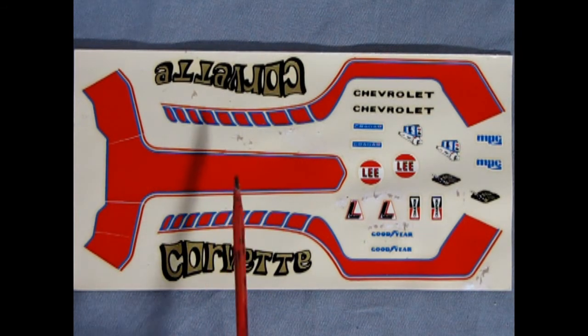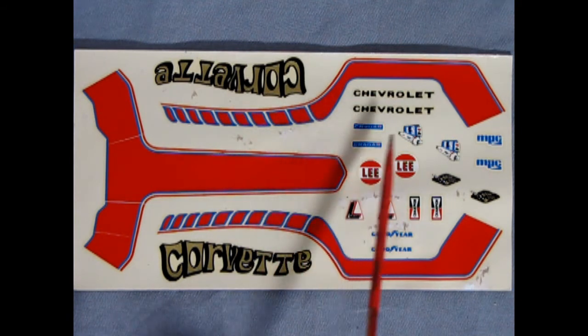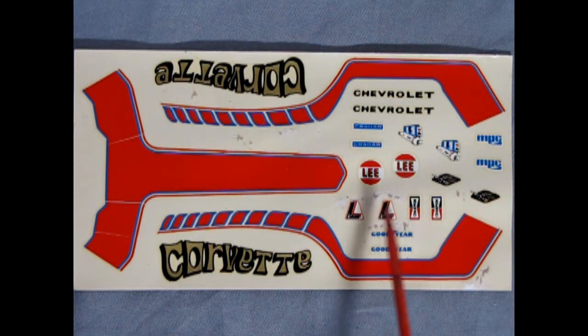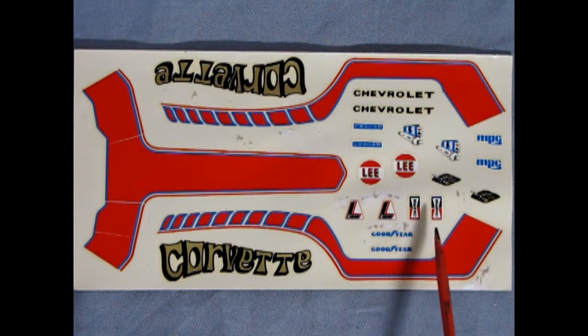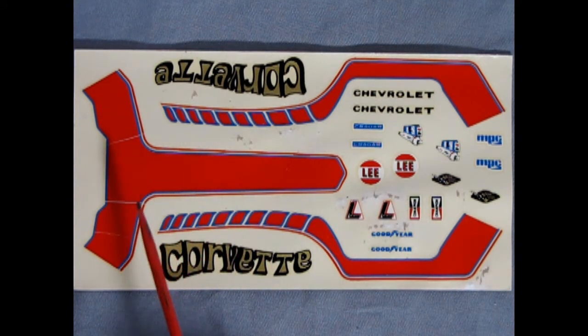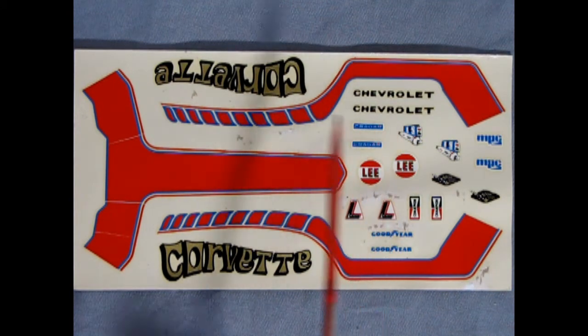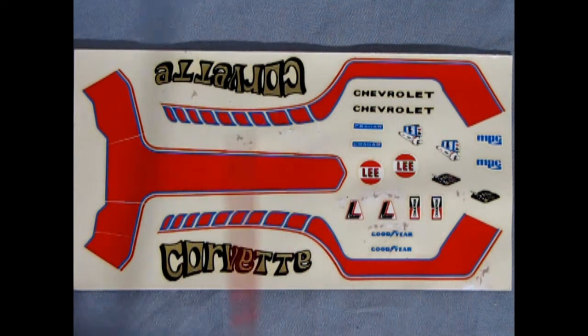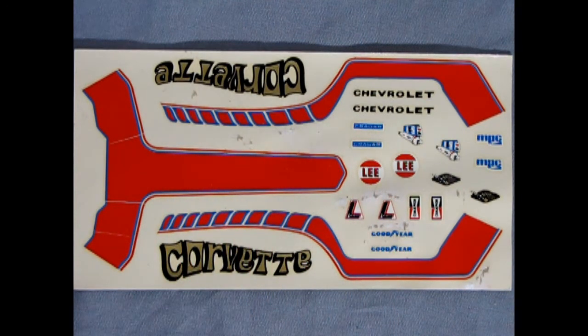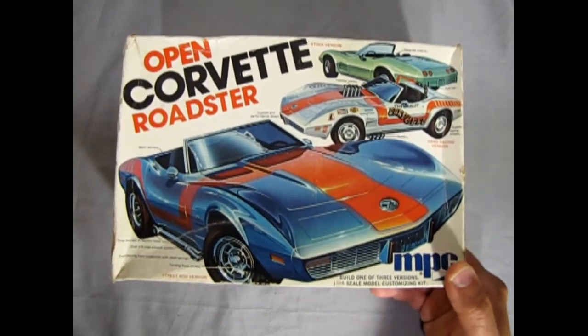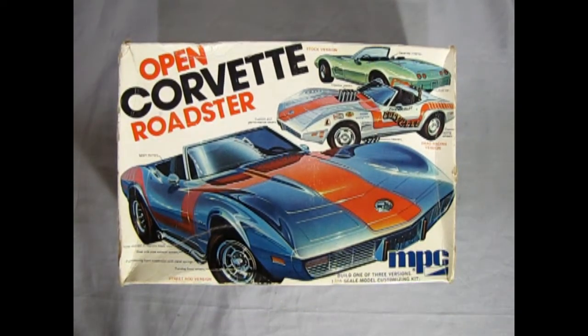Now how's this for a blast from the past? Here's our Corvette decal sheet. And as you can see, there's a lot of cool things on here. The MPC logo, Lee, Crager, Chevrolet, Goodyear Champion, and many others. Now the problem is these decals have got really old and they've cracked. There is a technique where you can spray clear lacquer over top of this. A bunch of coats and that'll hold it all together as you soak these in the water. And that completes our look at the MPC 1975 Corvette Open Roadster.